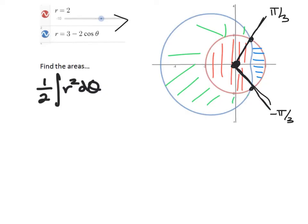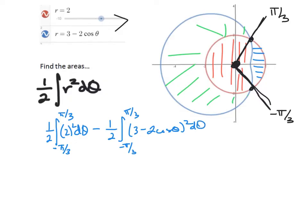To find that red area, let's start with that blue area. Excuse me, the blue area. We would do one half the integral of the circle squared d theta from negative pi over 3 to pi over 3. If you're worried about the negatives, just do 0 to pi over 3 and double your answer. We would subtract off the Limacon's area from negative pi over 3 to pi over 3. Again, just remember it's one half the integral of r squared.